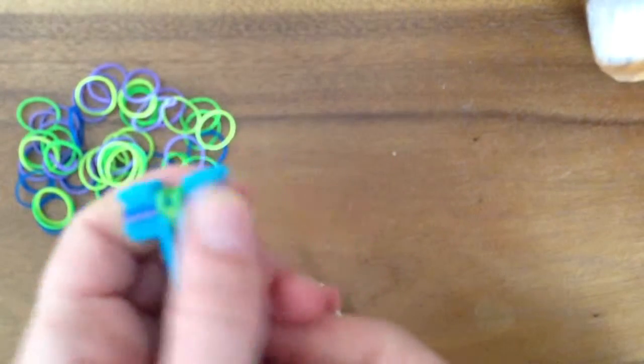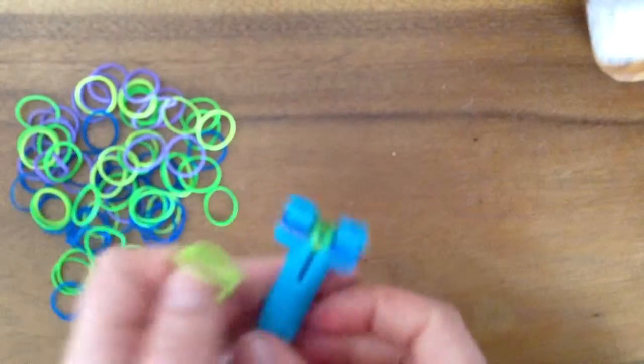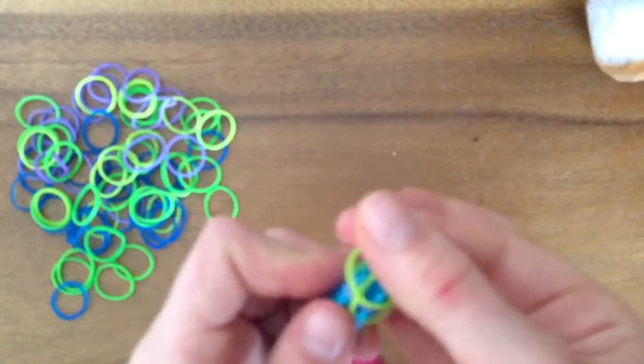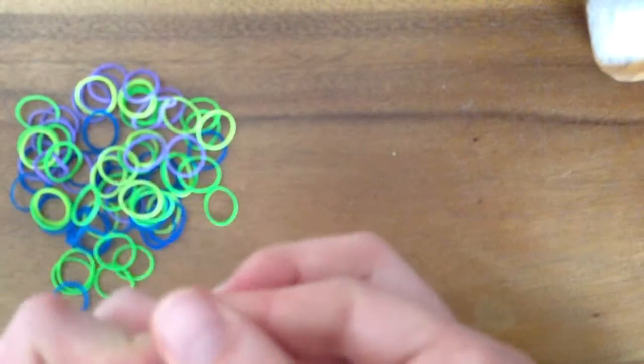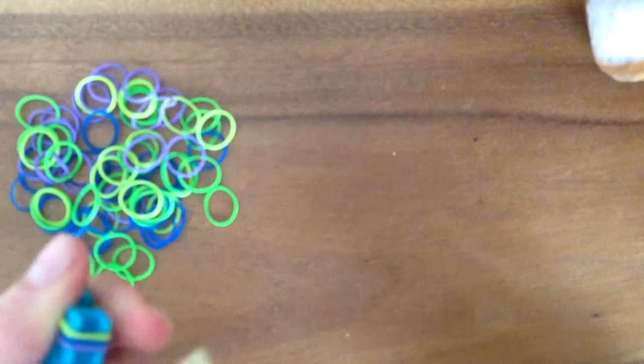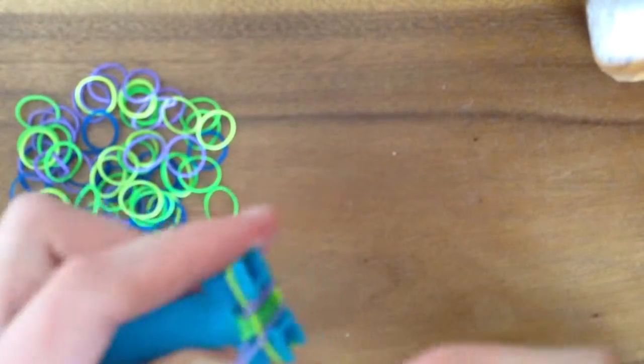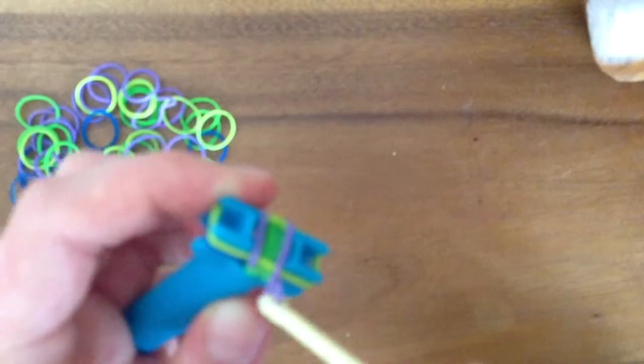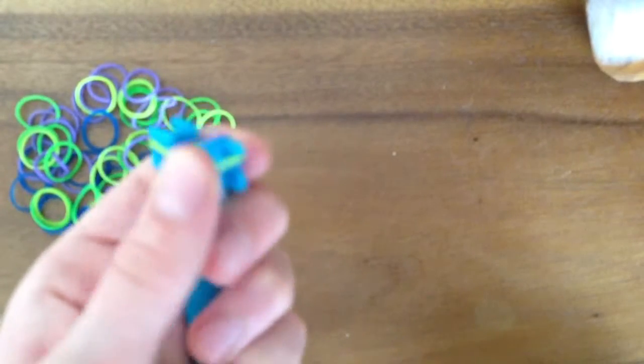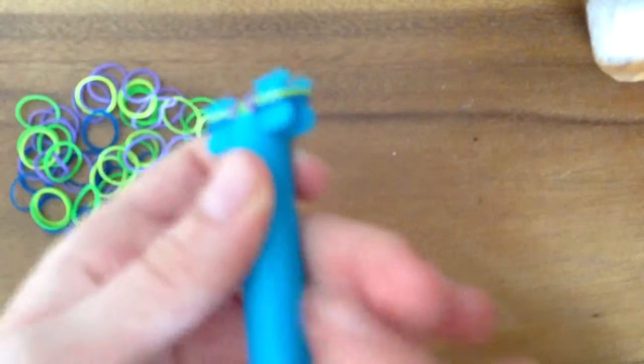So you're going to just keep on repeating these steps. Take a rubber band, place it on the mini loom, bring the bottom rubber band over and let go. Bottom rubber band over and let go. Push down and repeat. I'll be right back on camera when I start to form it.